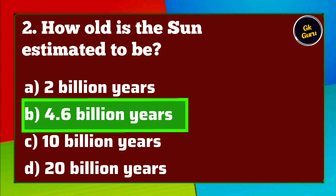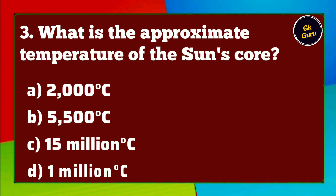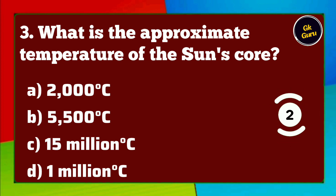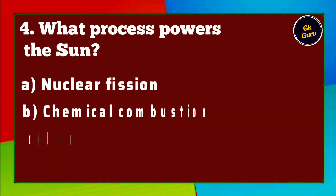4.6 billion years. What is the approximate temperature of the sun's core? A. 2,000 degrees Celsius B. 5,500 degrees Celsius C. 15 million degrees Celsius D. 1 million degrees Celsius. Answer C. 15 million degrees Celsius.